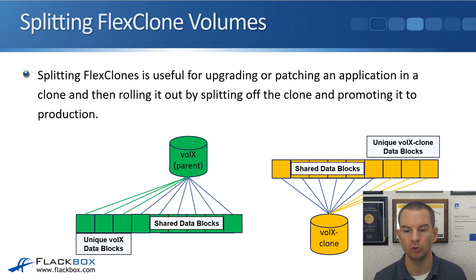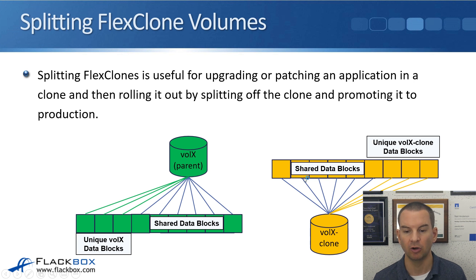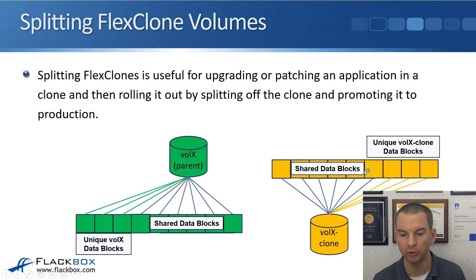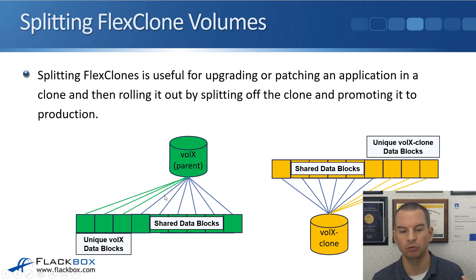When you split the FlexClone volumes, it makes that child volume its own complete volume — it's not going to be sharing the blocks anymore. These previously shared blocks will now have two separate instances and won't be shared anymore. Because you have split the FlexClone volume and you're happy with the new volume and the update, you can work from this new volume and retire the old one. If you hadn't split the FlexClone volume, you wouldn't have been able to retire the old one because of those shared blocks.